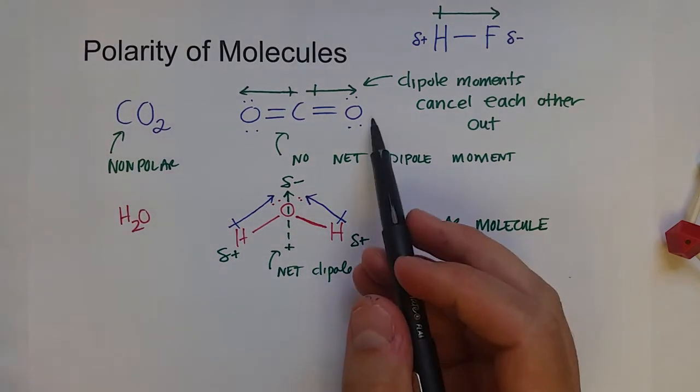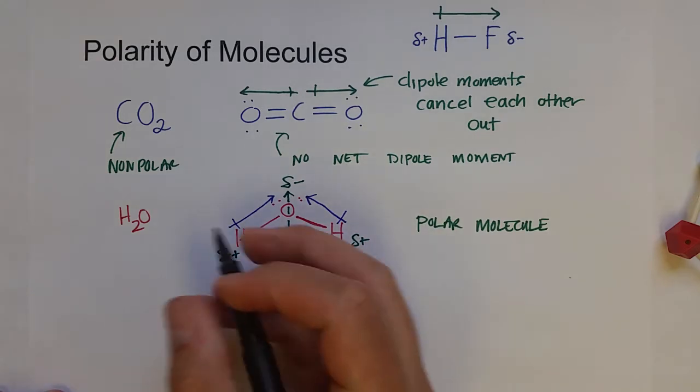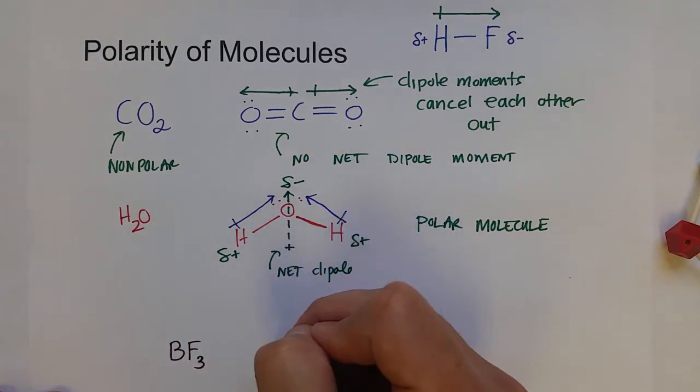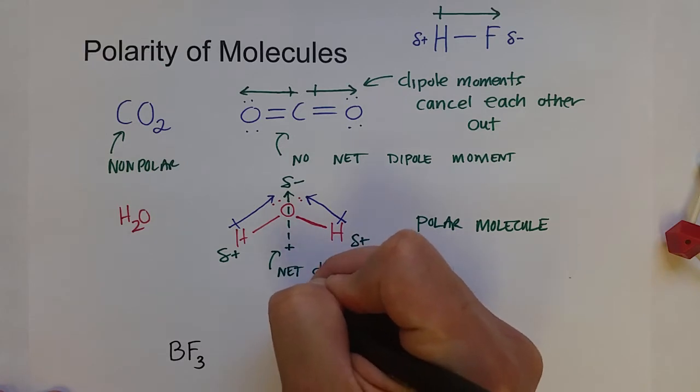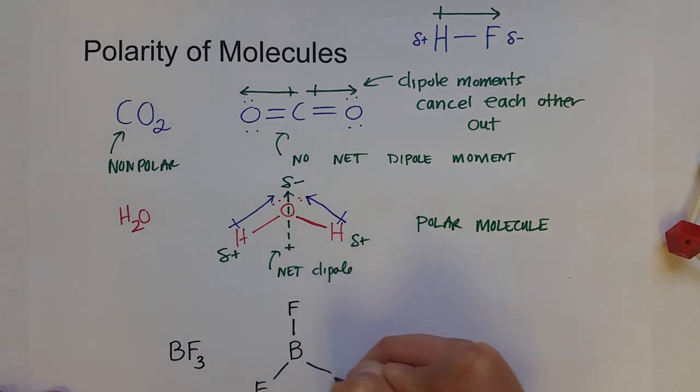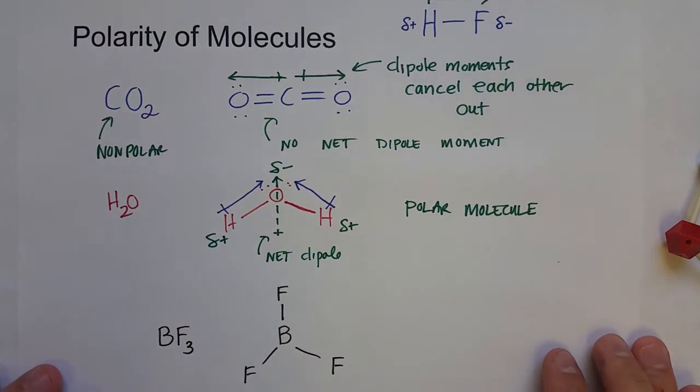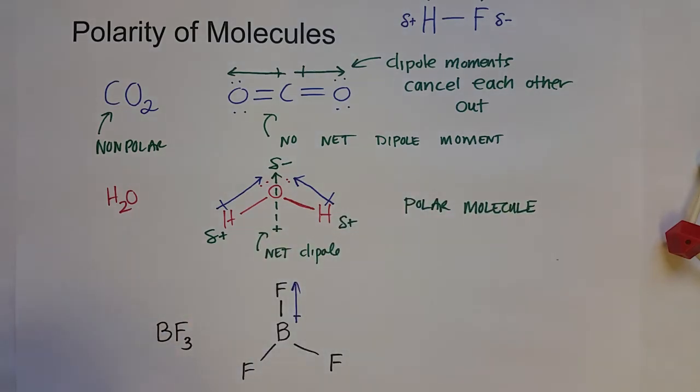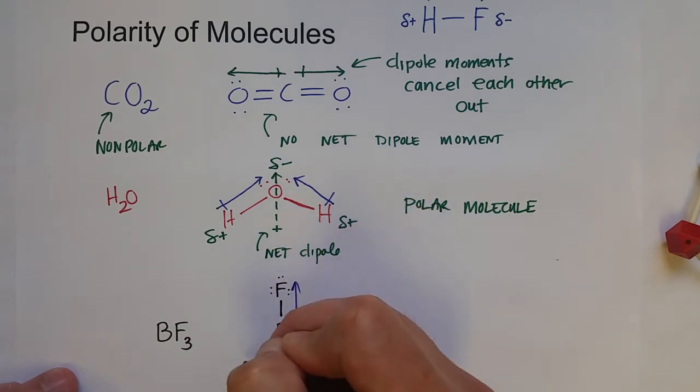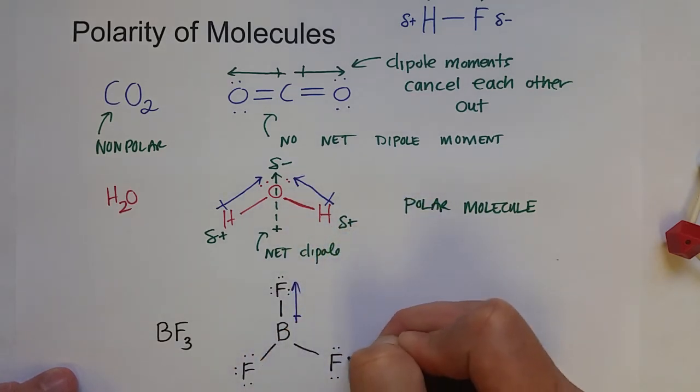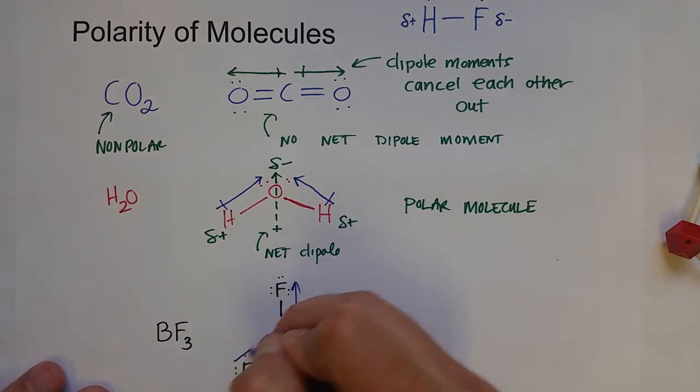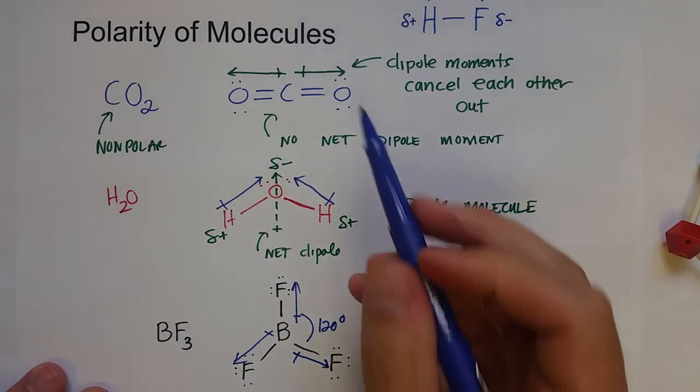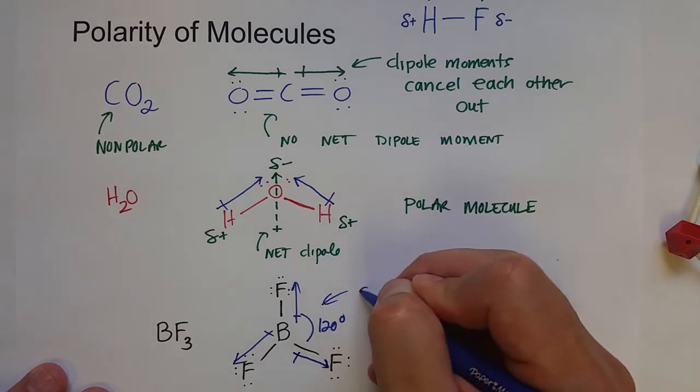This idea of dipole moments canceling out extends all the way to trigonal planar molecules. So something like BF3, boron can actually be stable with 6 valence electrons. And so it takes on a trigonal planar geometry. Fluorine is very electronegative. And so it is setting up a dipole moment for the electrons in boron. But since each of these fluorine atoms is equally spaced, 120 degrees apart from each other, just like carbon dioxide, these dipole moments cancel each other out.